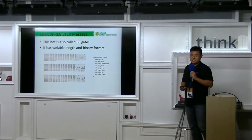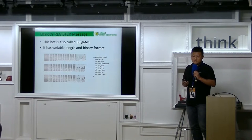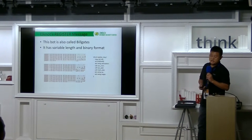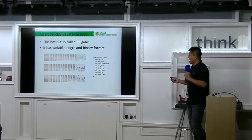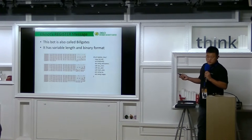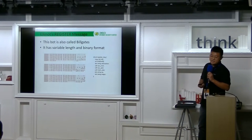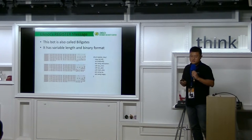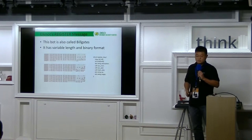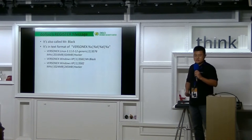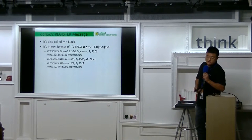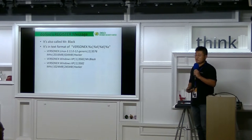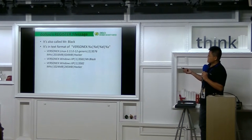This is a detailed register definition for Elknot. This bot is also called Bill Gates. The right here is a C language style structure. As you can see, this bot's register message has a binary format and has semantic strings inside. This is a register definition for the Doflow family. This bot is also called Mist Black. In most cases, it has this text format as demonstrated by the following examples.